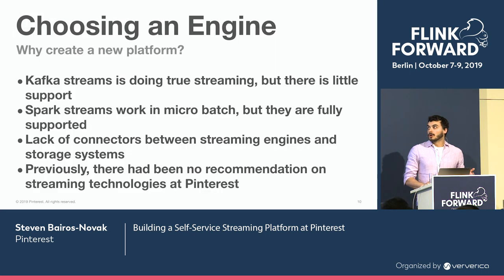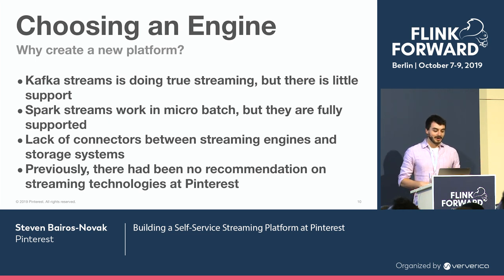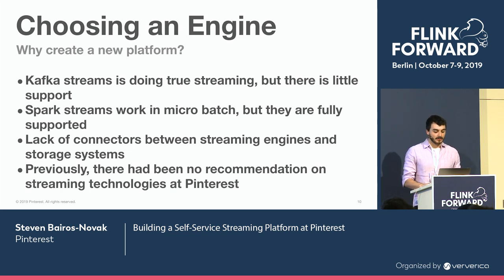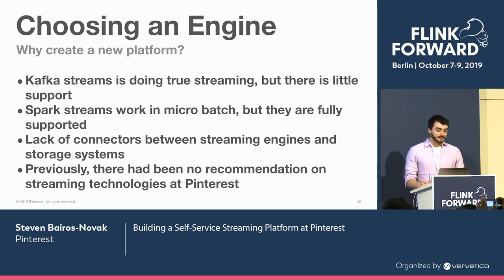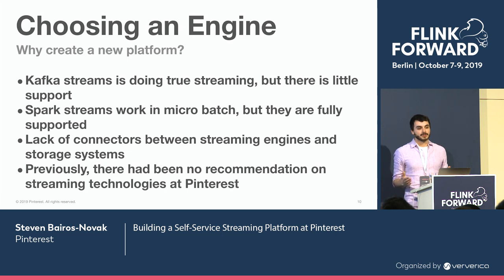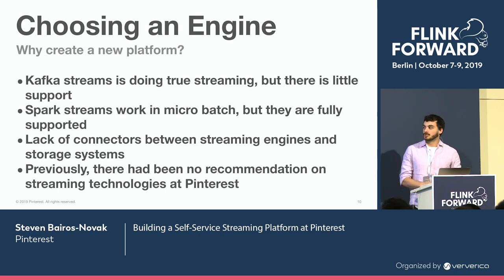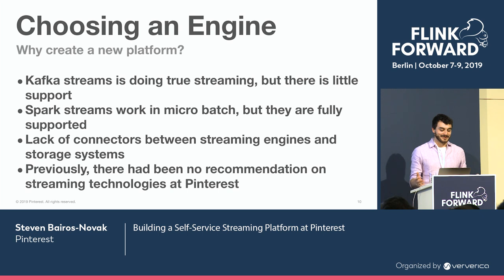Why did we need to choose a streaming engine? Kafka Streams can do true streaming, which is great, but there's very little support from the company for it. On the other hand, Spark micro-batch is fully supported, however it is micro-batch and not true streaming. We also had a lack of connectors between streaming engines and storage systems, partly due to fractured infrastructure with a few jobs on Kafka Streams and many on Spark Streams. So the first step was to finally decide how we're going to run streaming jobs at Pinterest.